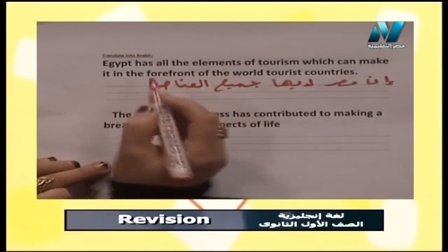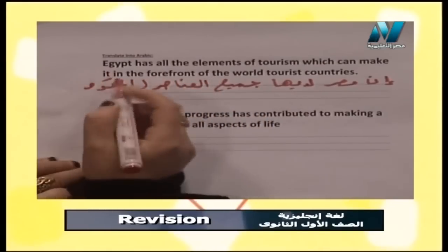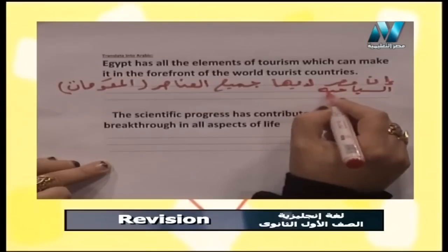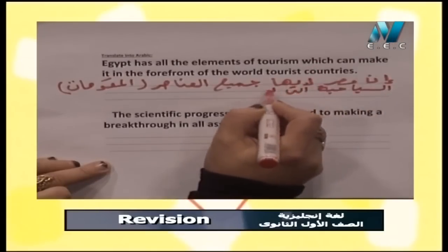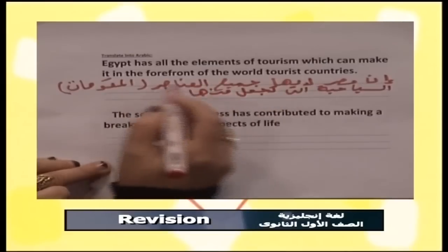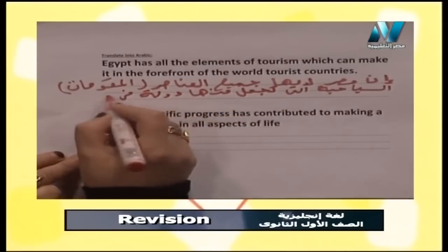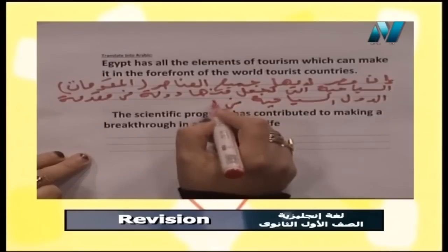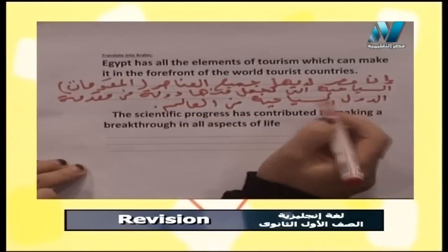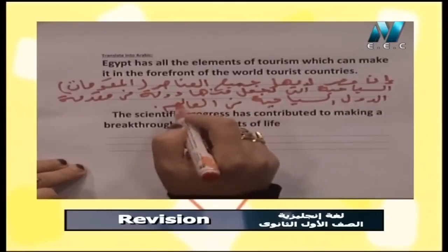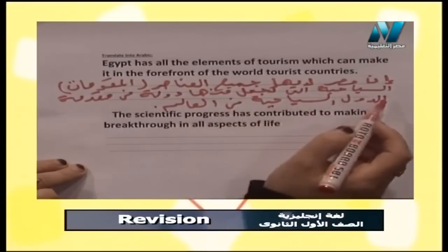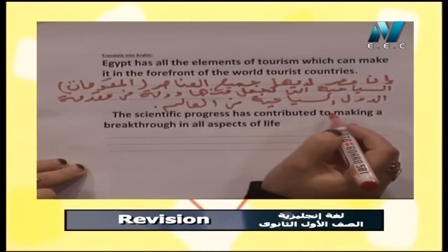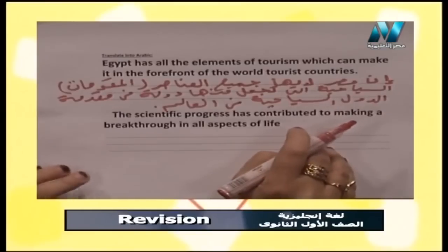المقومات أقرب للعربي من elements - يبقى 'جميع المقومات السياحية التي تجعل منها دولة في مقدمة الدول السياحية في العالم.' اللي بيقرأ جملتي بيحس إنها مش مصطنعة أو word by word، كأنها جملة عربية من الأساس. لازم نعطي المعنى العام وفي نفس الوقت نعطي الروح العربية للترجمة.